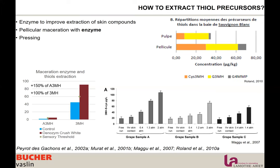The next step is skin contact, pellicular maceration, and pressing. Studies show that the more skin contact you have, the more compounds you get, and higher pressure during pressing extracts more of these compounds. Lees stabulation is also helpful — thiolic precursors tend to stick to solids, so a lees maceration or stabulation at cold temperature favors the release of these compounds into the must. Higher temperature maceration also increases extraction.